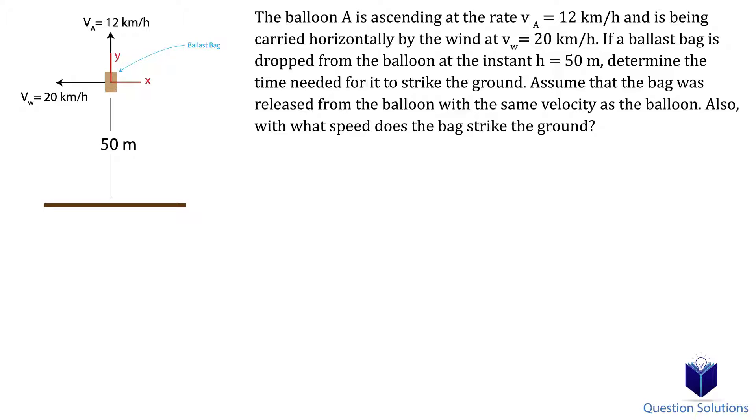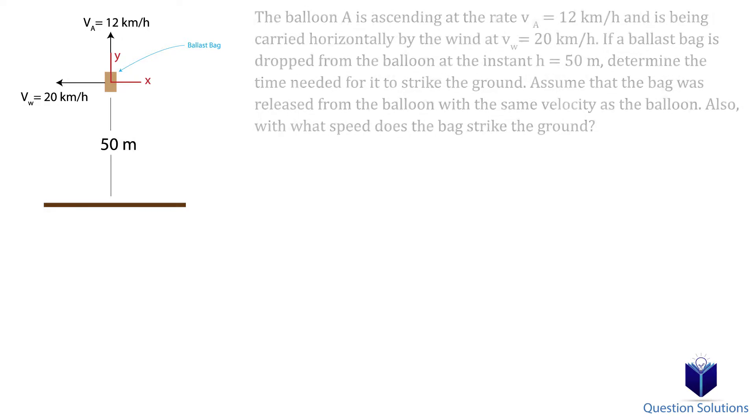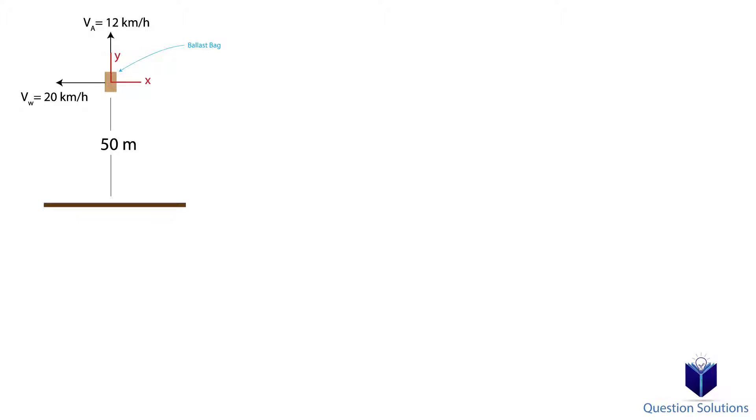Using our simplified diagram and coordinates system, let's write down what we know. The location of the bag in the horizontal direction at the start is at 0 meters. The vertical location, H0, is 0 meters. The final location, H, is at negative 50 meters.